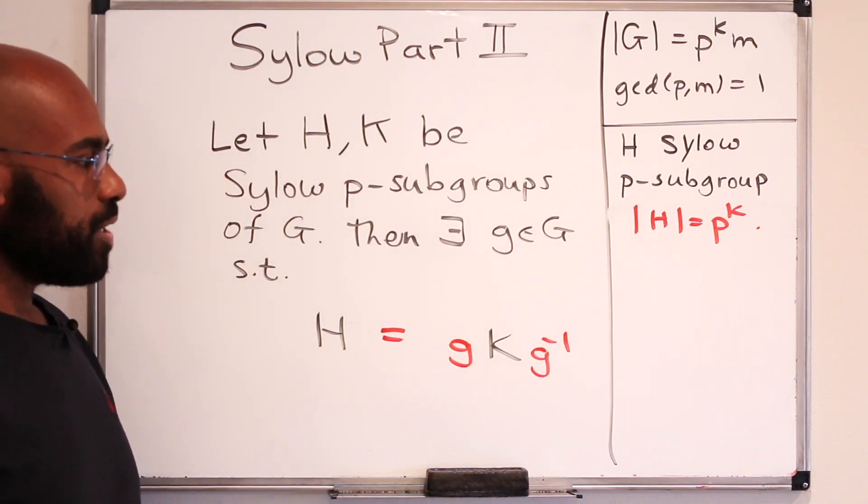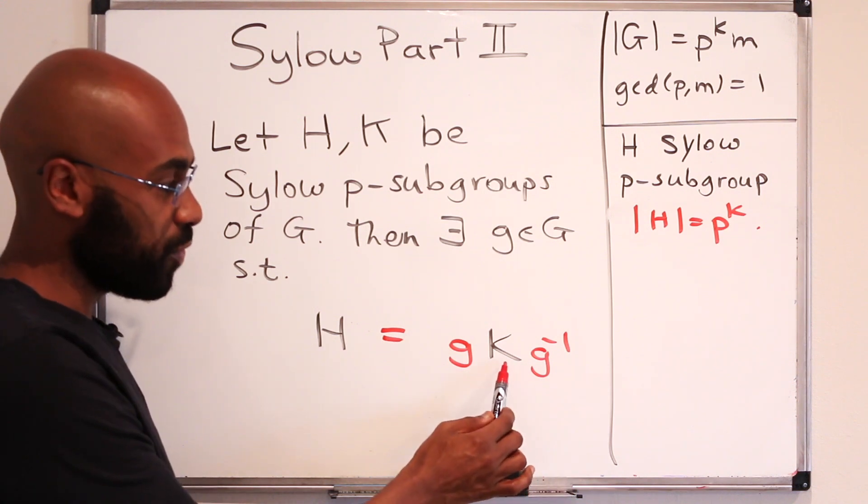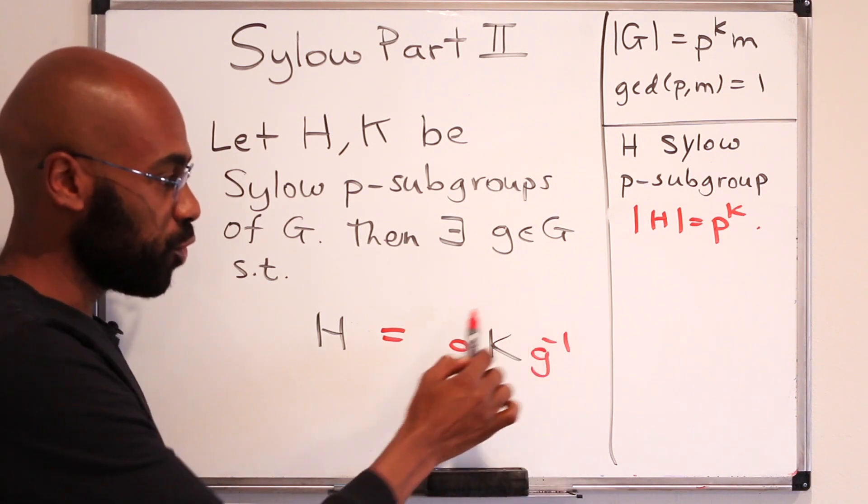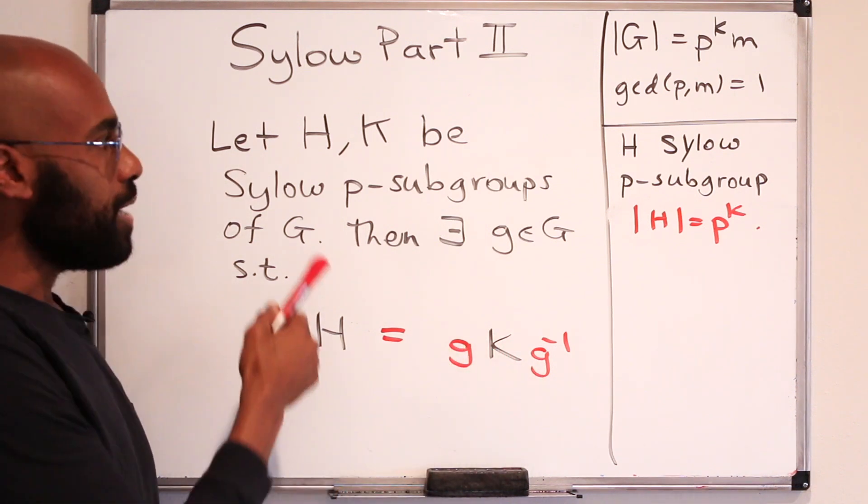So I want to talk a little bit about this. So this thing here is called a conjugate of the group K. It's actually a group itself. The name actually comes from the fact that we did the operation of conjugation.